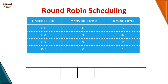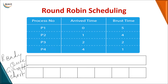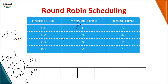We'll see an example with Round Robin scheduling. We maintain a ready queue and a Gantt chart. At time 0, P1 is the only process present, so P1 is placed in the ready queue. I'm assuming a time slice of 2 milliseconds, so P1 will execute for 2 milliseconds.